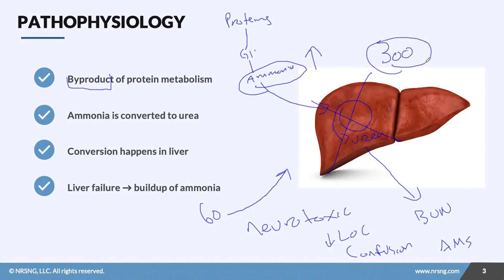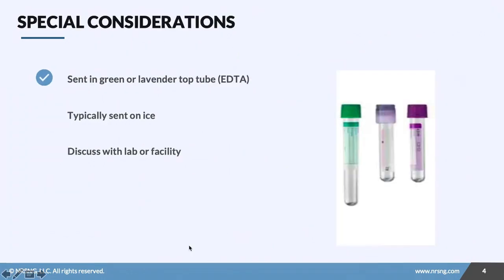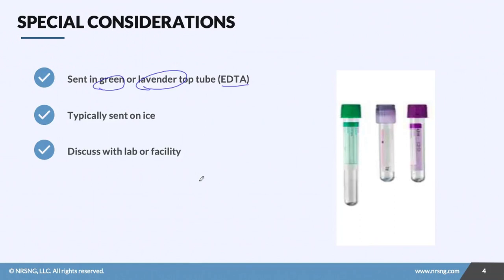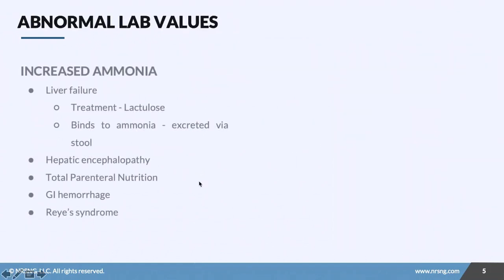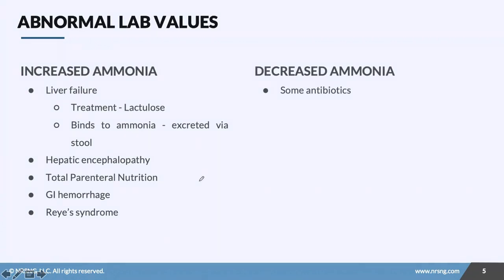This can get very severe — ammonia can go as high as 300. These patients, who would normally be on a liver or med-surg floor, get transferred to the neuro ICU because their ammonia is so high and their level of consciousness so low that they may even be placed on breathing machines. For lab collection, we send it in a green or lavender top EDTA tube, sometimes on ice — check with your facility.